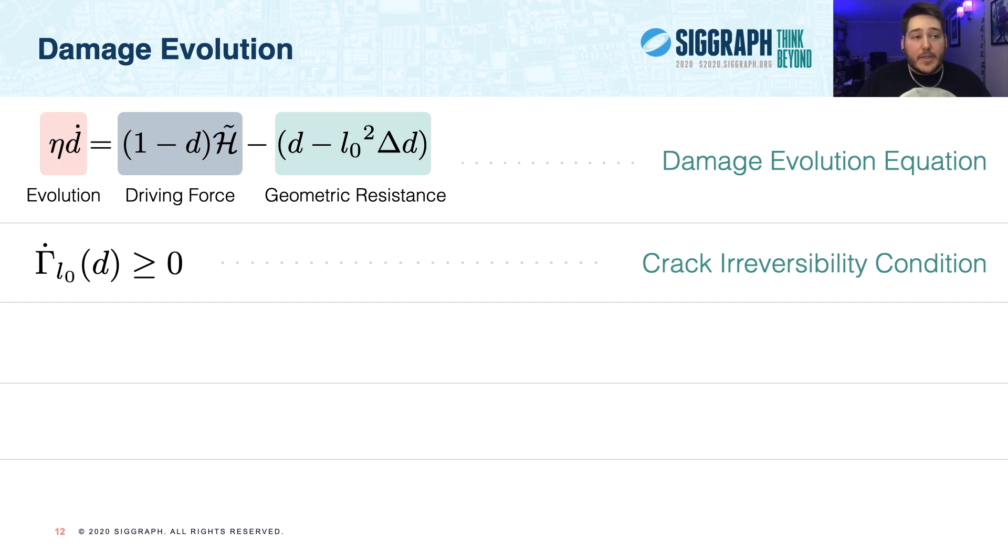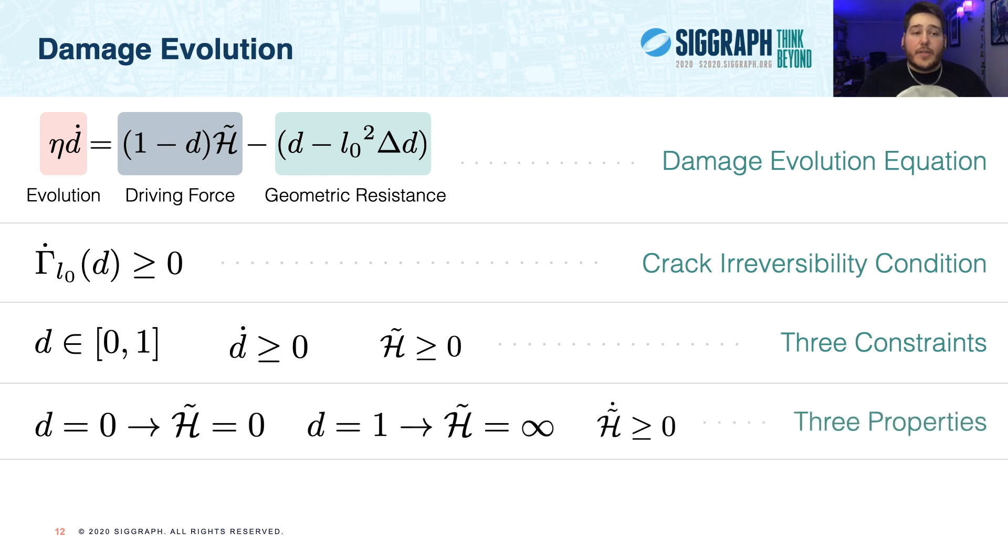Our damage evolution is derived from the aforementioned crack density function and can be thought of as a balance between a local crack driving force and a geometric resistance to fracture. And note that the eta parameter on the left is included to control the speed of crack propagation, and the geometric resistance here is unique to our chosen crack density function and includes the damaged Laplacian. Finally, as damage evolves during simulation, we must enforce what's called crack irreversibility, or simply making sure that cracks don't heal over time.